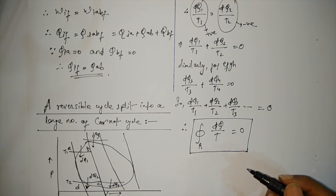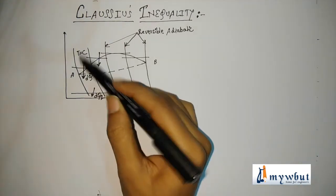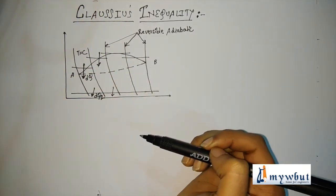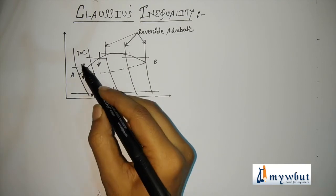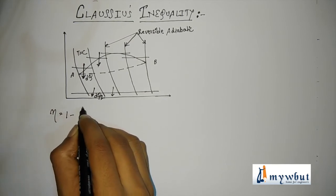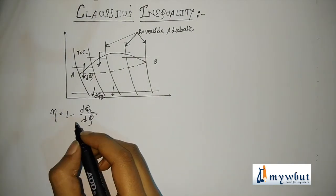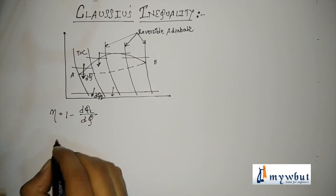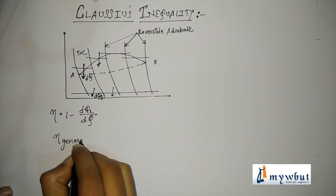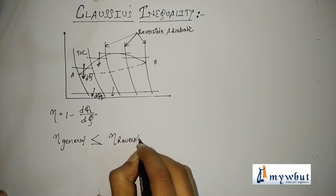Now further we will be proving the Clausius inequality. I have drawn a graph and again separated it into several Carnot cycles. Here you can see the heat rejected is dq2 and the heat supplied is dq. So we can say efficiency equals 1 minus dq2/dq. Now we know that the efficiency of any general cycle will be less than or equal to the efficiency of any reversible cycle.